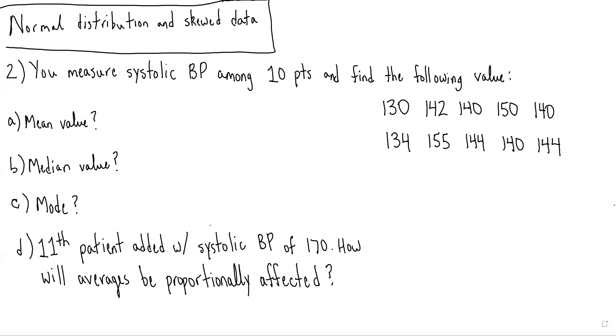the mean value, the median value, and the mode. The mean value is the sum of values divided by the total number of patients. So this would be 130 plus 142 plus all the other values plus 144 all over 10. I would encourage you to use your calculator function in the NBME exam when you do this and you would get a mean value of 141.9.